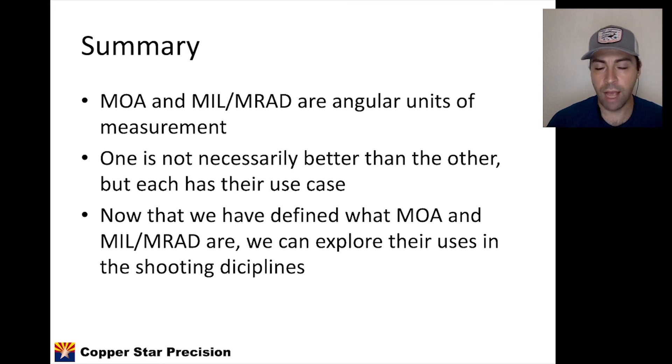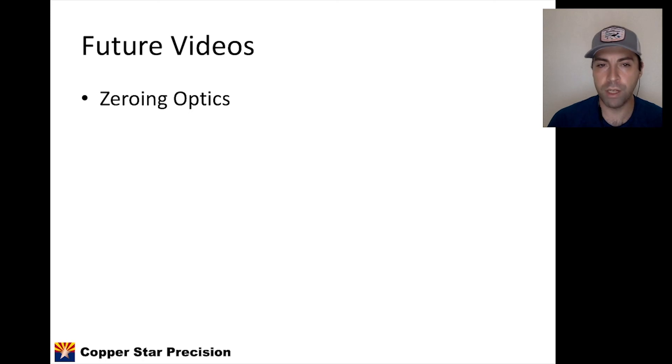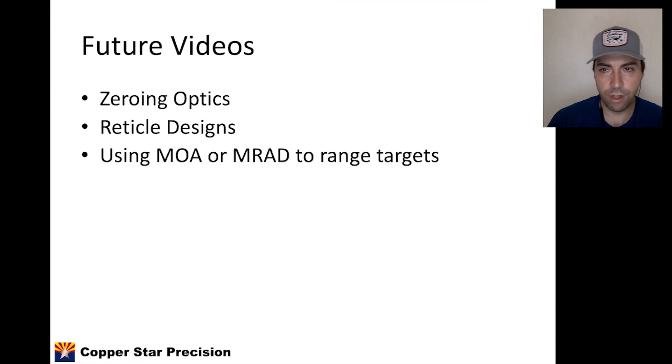So future videos will include how to zero your optic. We're going to talk about how much adjustment you need to make in your turrets to get your optic zeroed for a certain distance. We'll talk about reticle designs. So different reticles have different subtensions. You might have heard of a mil dot reticle or Christmas tree reticles. All of these have different advantages and some disadvantages when it comes to the different shooting disciplines. Sometimes you may want a fine crosshair. Sometimes you might want a Christmas tree reticle that has striations for wind holdovers and all that good stuff.